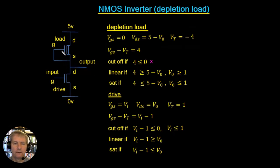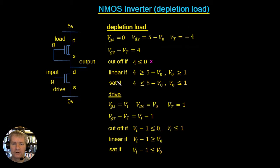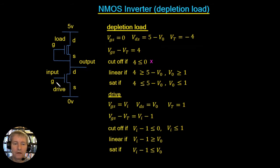The current is going to flow down through this device. If the drive device is initially off, the current flows down through the load device and out to the output. Say there's a capacitor load — the output voltage will rise up using the saturation current until it hits one volt, and then above one volt it'll rise all the way up to five volts using the linear region. The drive part is exactly the same as the previous design, so I won't cover that again.